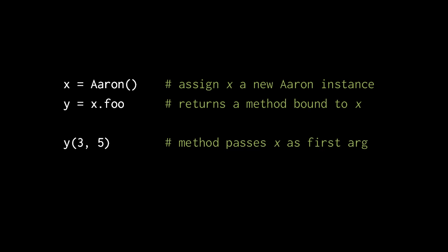What methods are is really just an elaborate mechanism to somehow get that object before the dot, in this case x, passed as the first argument.